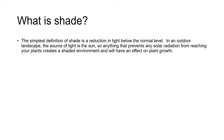So let's start with what shade is. The simplest definition of shade is a reduction in light below the normal level. In an outdoor landscape the source of light is the sun, so anything that prevents any solar radiation from reaching your plants creates a shaded environment and is going to have an effect on plant growth.